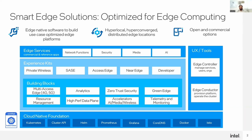An easy-to-consume model, for example, could be for someone who wants to deploy private 5G — they can utilize the private wireless experience kit from the catalog of experience kits, as is, and scale from there.